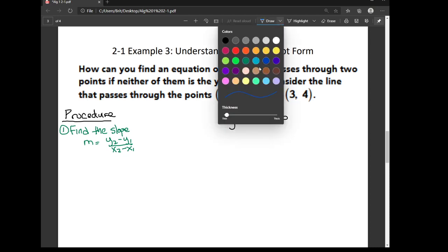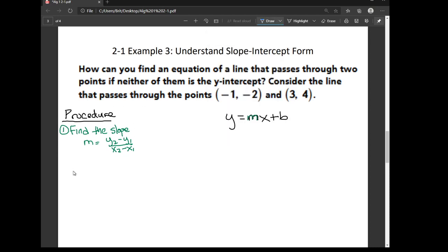And the second step is to use the slope and one point, it doesn't matter which one, to solve the slope for b, or for your y intercept.